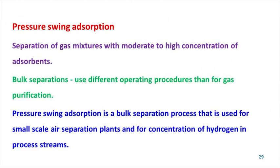Pressure swing adsorption: although adsorption is most often used as a purification process to remove small amounts of material, a number of applications involve separation of gas mixtures with moderate to high concentrations of adsorbates. These are called bulk separations and they often use different operating procedures than for gas purification. Pressure swing adsorption is a bulk separation process that is used for small-scale air separation plants and for concentration of hydrogen in process streams.